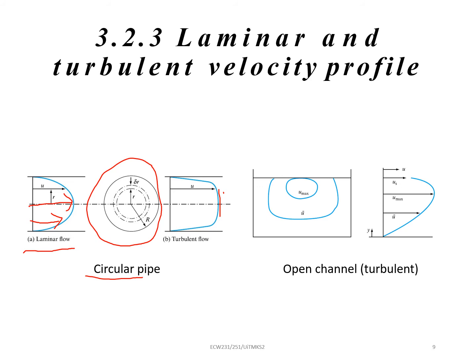And then for turbulent, we need to write down the maximum velocity. So we have u max. So you can label u max and also another u. This is how the open channel turbulent looks like.